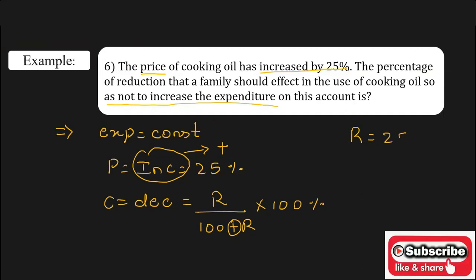Now substitute the value of R in the formula: consumption is equal to 25 divided by 100 plus 25 into 100 percent. Now solve this one: 25 into 100 is 2500 upon 100 plus 25 is 125 percent. Now it will get cancelled, so the answer is 20 percent.